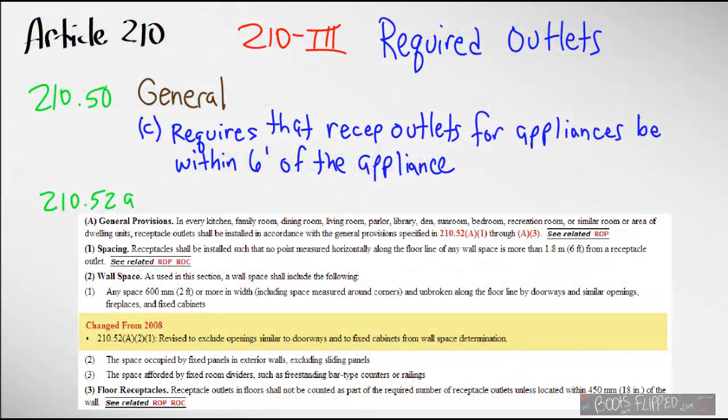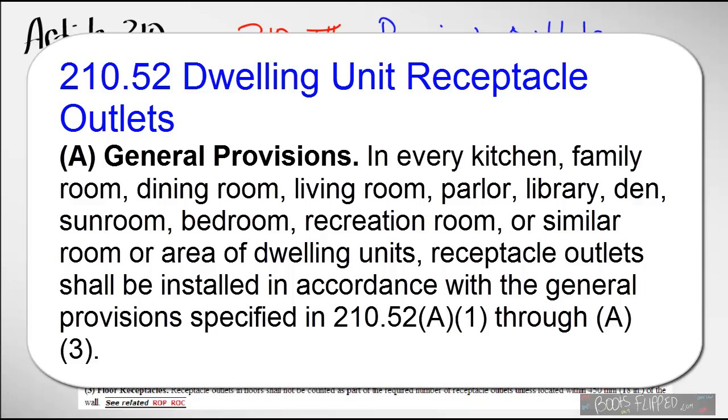So let's get back to what we were talking about. Let's check back with article 210.52A, and that gives us our general provisions or where and how we need to put in our receptacles. This part of the article is very important, especially in a dwelling unit. This is definitely one of the most easiest ways to get a red tag on a job site is to not follow these rules or the codes. In the general provision, it's telling us that in the kitchen and family room, dining room, living room, parlor, all the rooms basically of the house, we have to install our receptacles according to these codes.